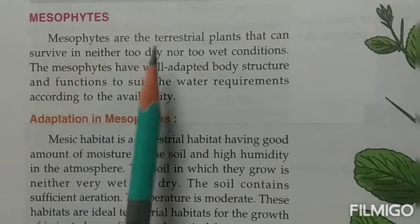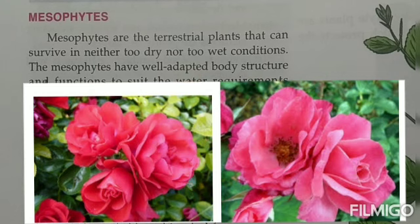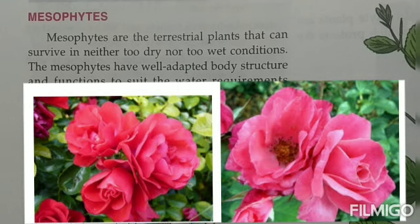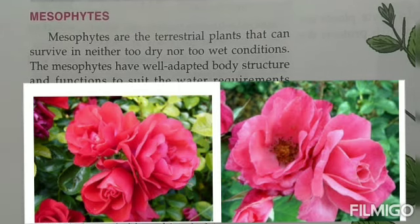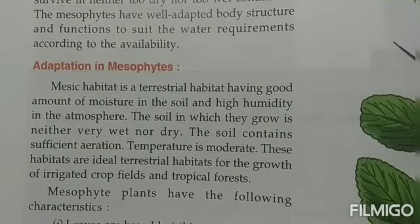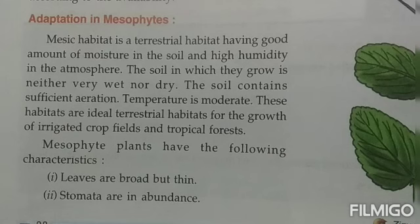Mesophytes are the terrestrial plants that can survive in neither too hot nor too wet conditions. That means they need neither a lot of water nor absolutely dry conditions — they need a moderate amount of water. Mesophytes have a well-adapted body structure and functions to suit water requirements according to availability, so they survive very well where they get only a moderate amount of water.